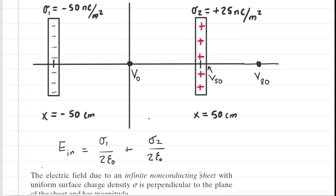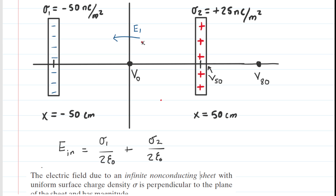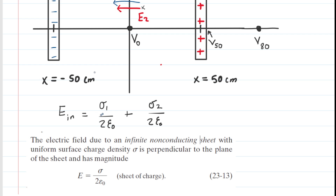Let's talk about the direction of these fields. Picking an arbitrary point between the plates: the plate on the left is negatively charged, so it creates an electric field pointing towards those negative charges — meaning E1 points to the left. The right-hand plate is positive, and electric fields from positive charges point away from the charge, which also points to the left as E2. Since both fields point left, we assign negative signs to both terms in our expression.